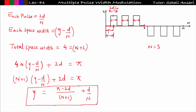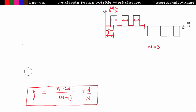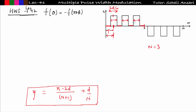Why are we finding gamma? Because we need to find the Fourier series expression of this multiple PWM waveform. First, check if this function has half-wave symmetry — and yes it does. The condition for half-wave symmetry is f(θ) = −f(π + θ). I will explain all the Fourier series concepts in Lecture 42; for now just understand that this waveform has half-wave symmetry (HWS).